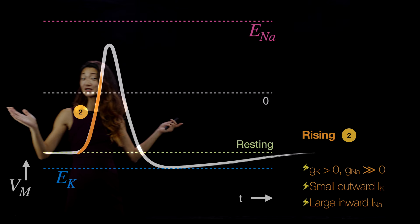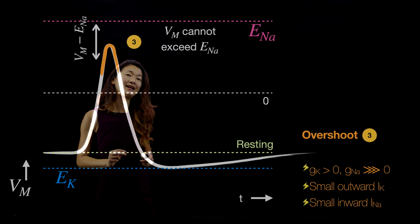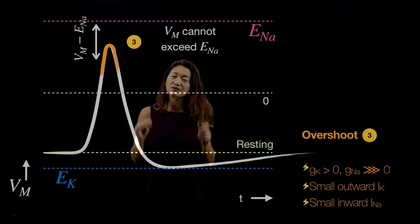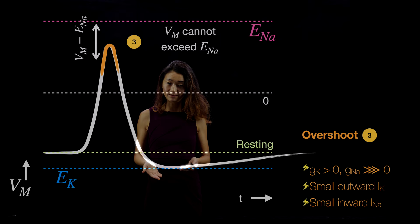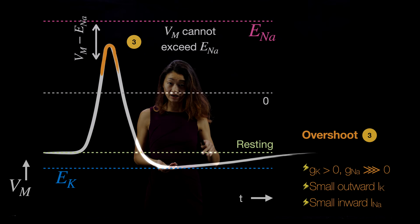But all things must come to an end — this party can't last forever. Near the top of the action potential, as the membrane voltage gets closer and closer to the Nernst potential of sodium, the driving force decreases. So even though those voltage-gated sodium channels are still open, there are no longer as many sodium ions rushing inside the cell because we're getting close to that equilibrium sodium Nernst potential. The current due to sodium is going to get smaller even though all the voltage-gated sodium channels are still open.